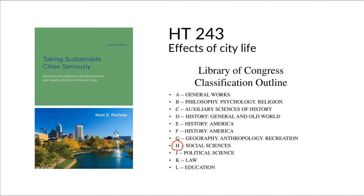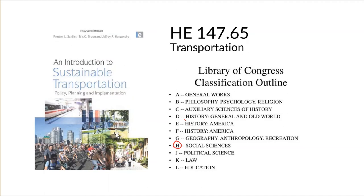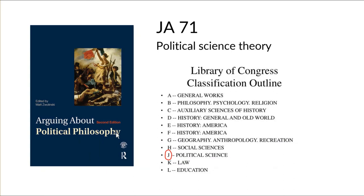H in the social sciences is where we will find the majority of the books about city life — for example at HT243, the effects of city life, taking sustainable cities seriously, and another book in the Hs related to transportation from a social science perspective. J in political science is where we will find books on political science theory, because at their heart the debates over sustainable cities relate to classical political philosophy, such as individual liberty and the role of government in the economy.